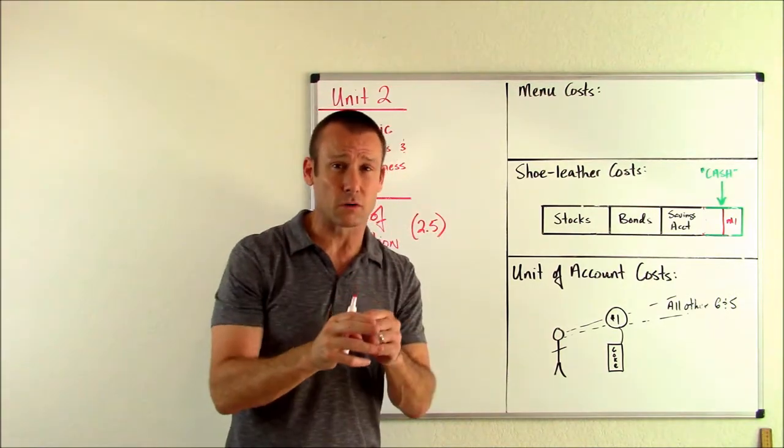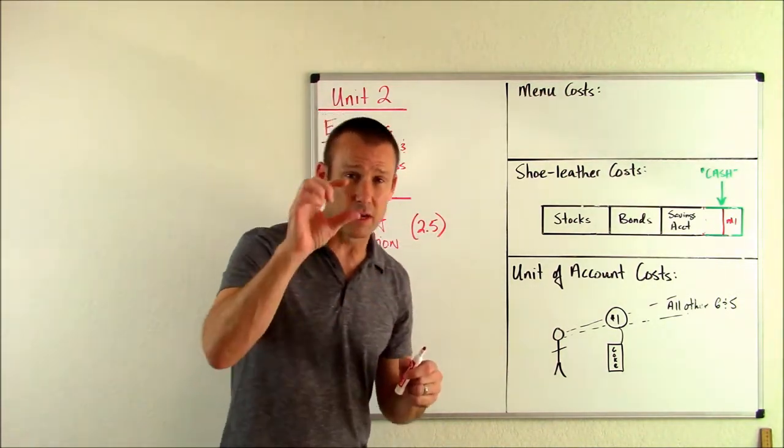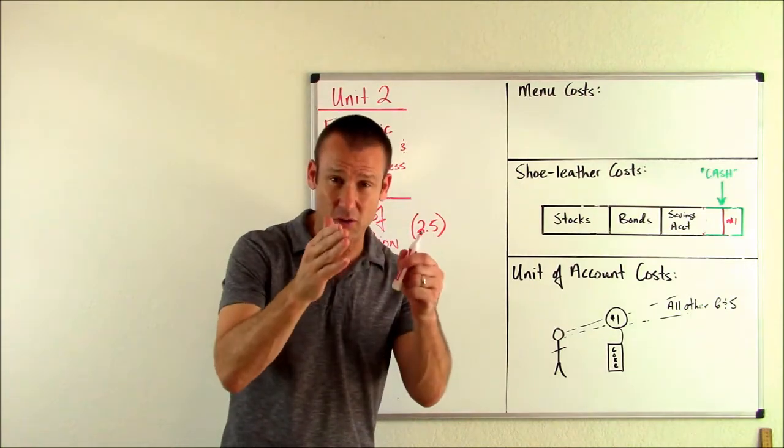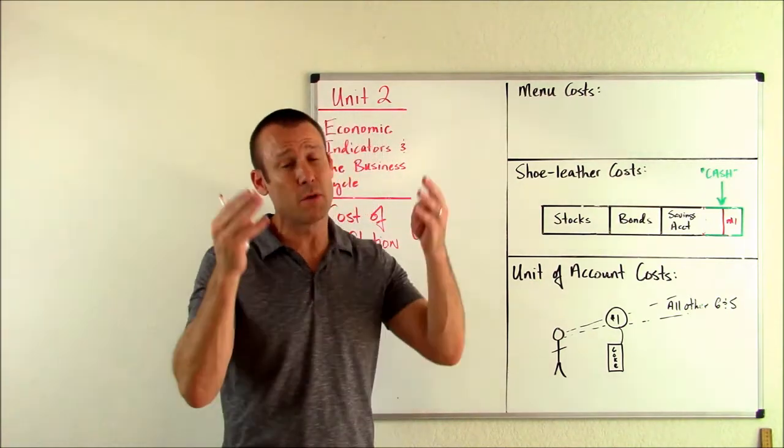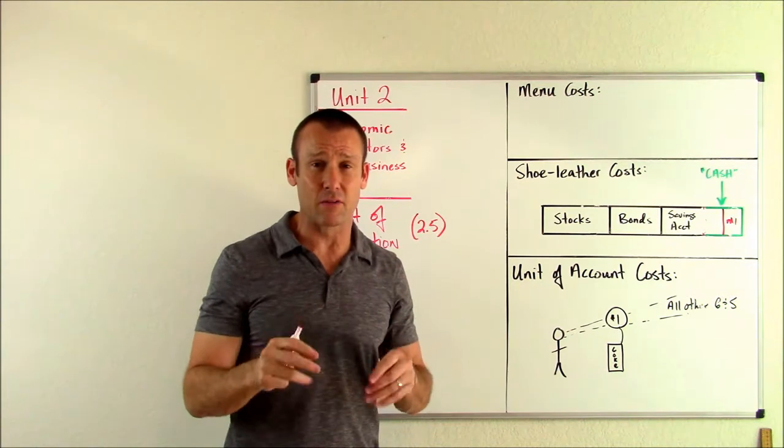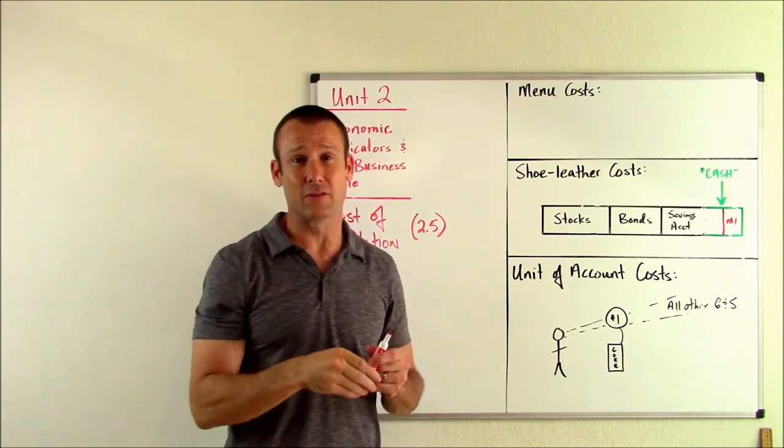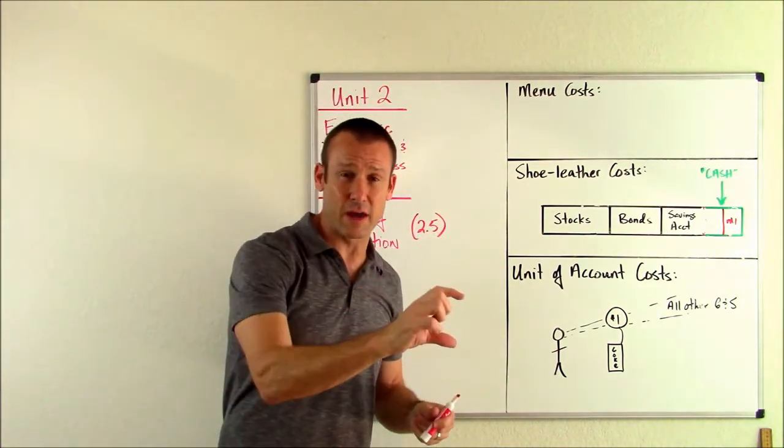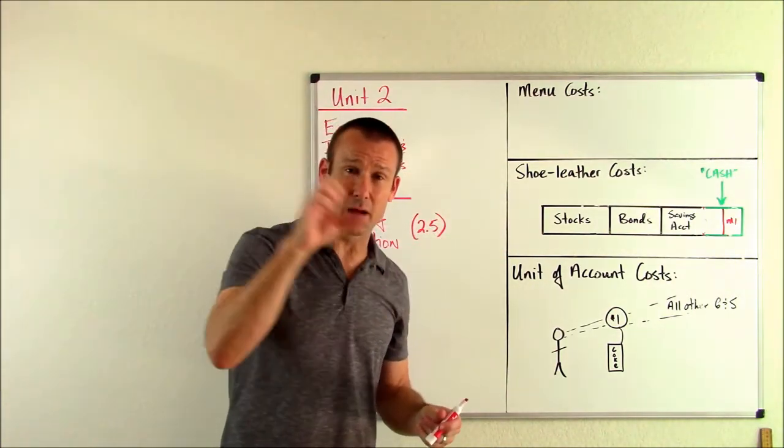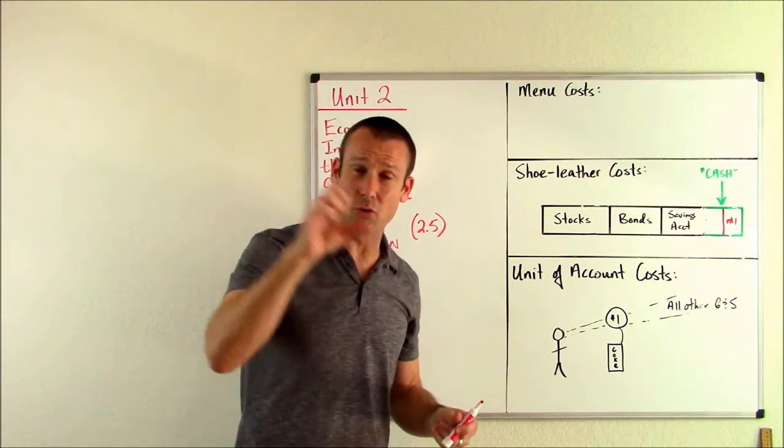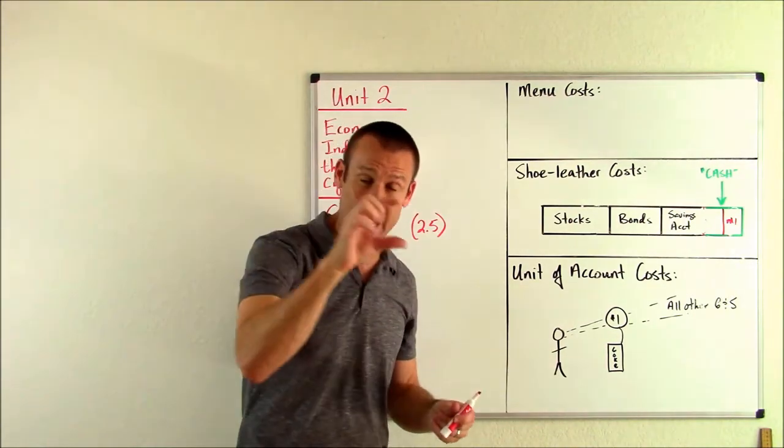You go get an apartment. That rent is going to be the value of your apartment. You buy a home, price the home, and go on and on. The dollar is the way we communicate value. And here's the issue. When inflation happens, the value of the dollar goes down, and it becomes a less reliable unit of account or a unit of measurement because it's changing.